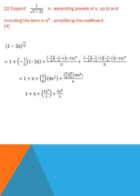Now move towards question number 2. Expand 1 over (1 minus 2x) to the root in ascending powers of x up to and including the term x cubed. Here we use binomial expansion. If you learn the formula for binomial expansion then it is very easy. We apply the formula only if the first constant is positive 1 and the other is a variable. We apply the formula 1 plus nx where n means the power, with variable minus 2x.